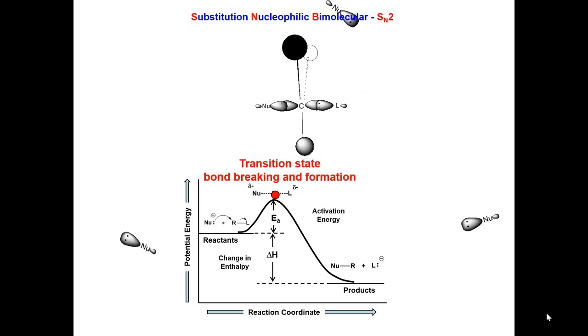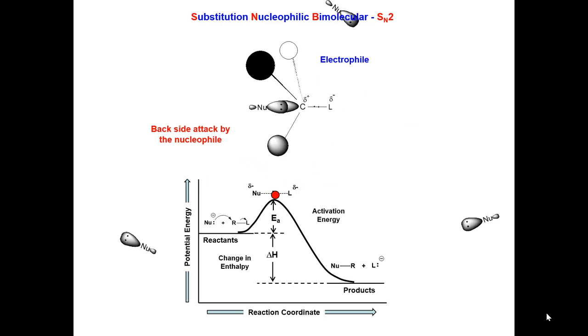As the reaction proceeds, a new carbon-nucleophile bond is formed, and the carbon-leaving group sigma bond breaks to form the more stable, less reactive products.